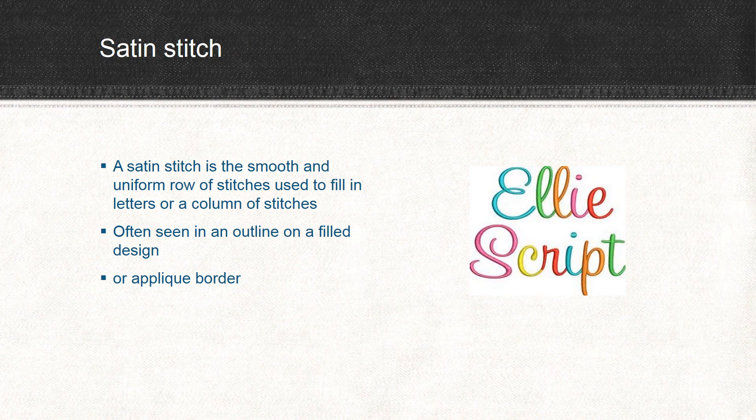A satin stitch is probably one you see most often, especially if you do monograms or lettering. It's a smooth and uniform row of stitches used to fill in letters or columns, and it's often seen in an outline, on a filled design, or as an applique border.